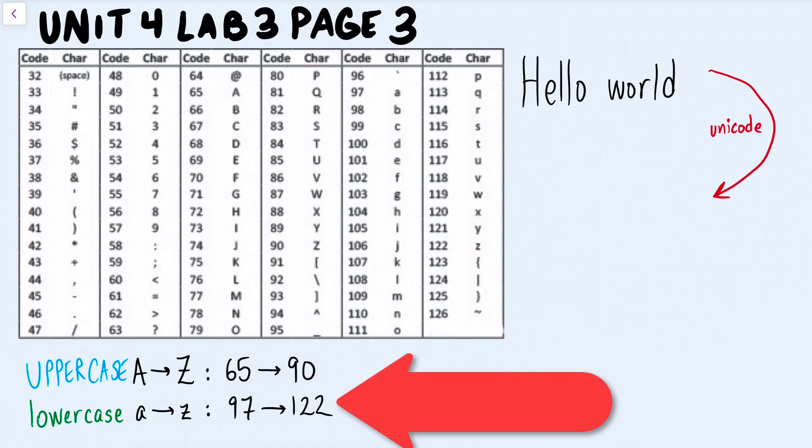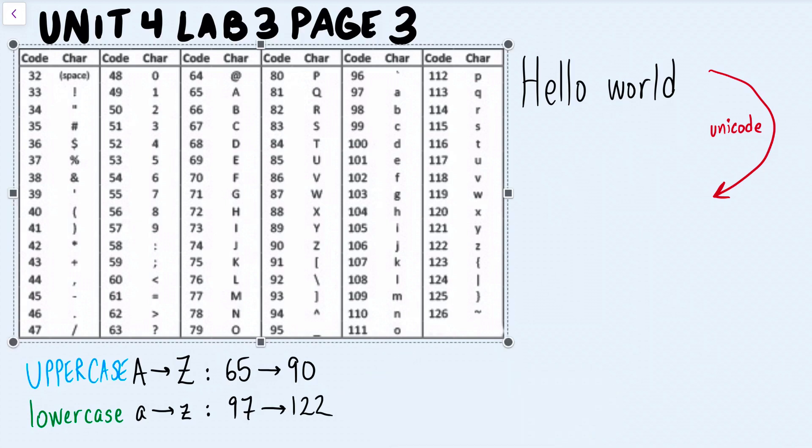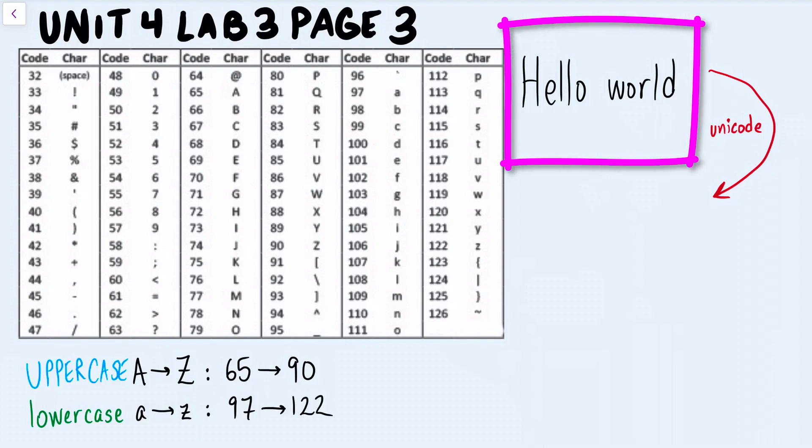For example, if you tell your computer that you're going to use Unicode and you put the number 97, the computer knows that you're looking at lowercase a. I'm going to show you how to encode your letters in Unicode. I first have to encode the capital H, which is right over here, 72.